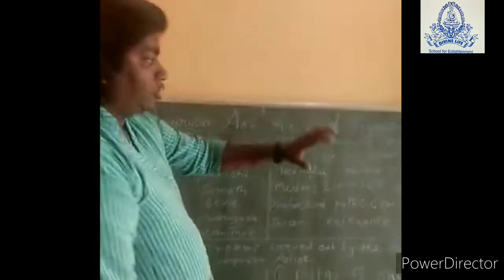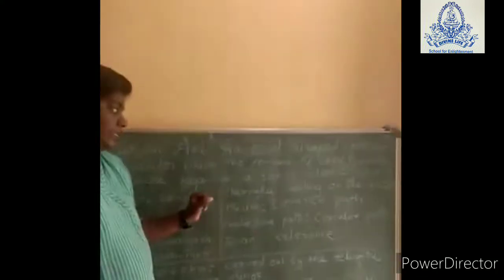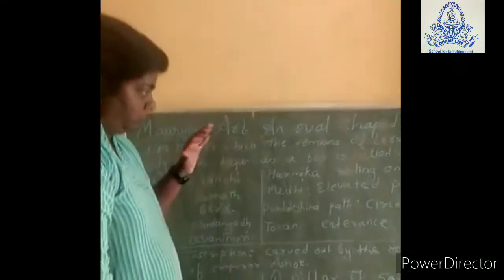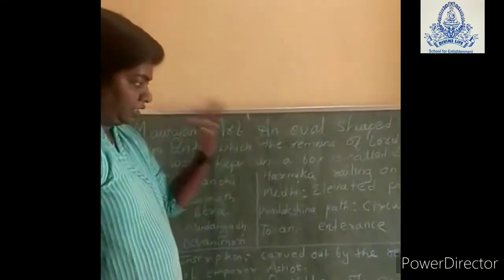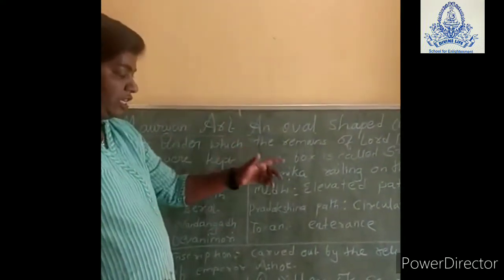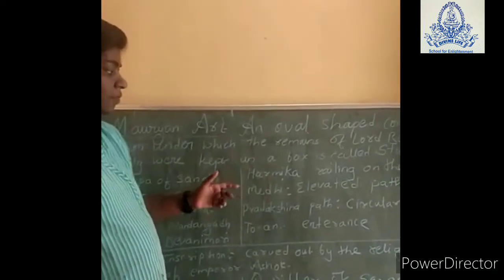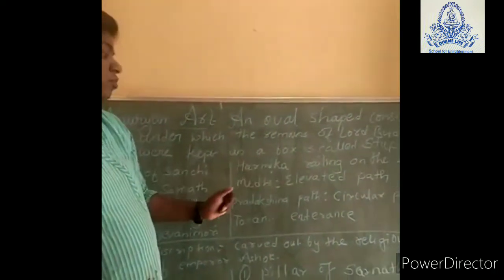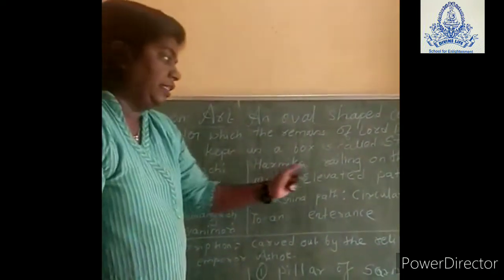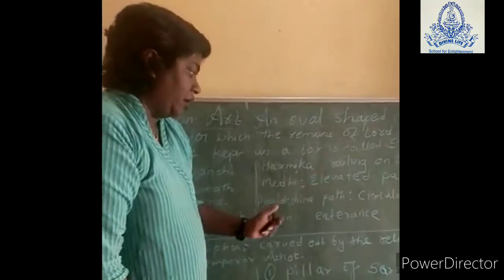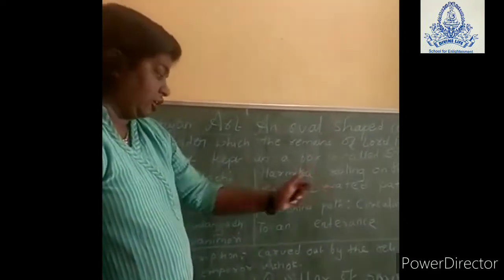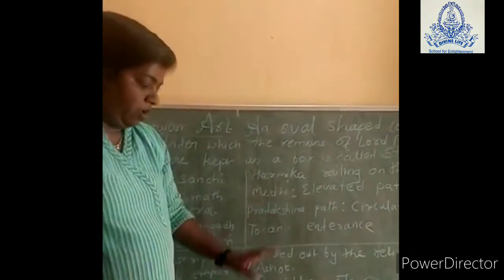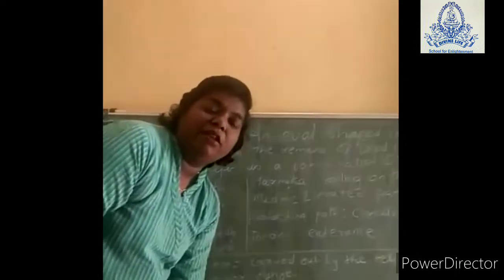Now the linear sketch of stupa is as seen. I will make you study in detail. First, have a look at the different parts: Hermika, which is the railing on the top; Mahandi, the elevated path; Pradikshna path, which is the circular path; and Toran, which is the entrance.